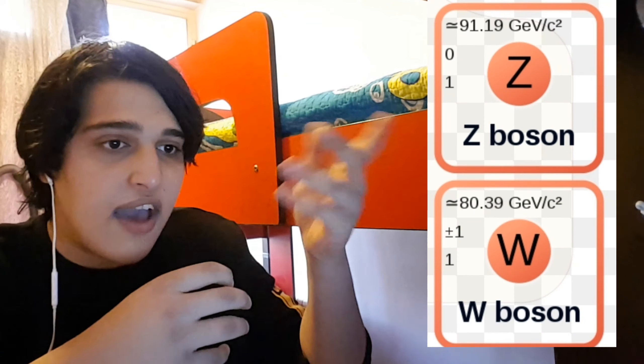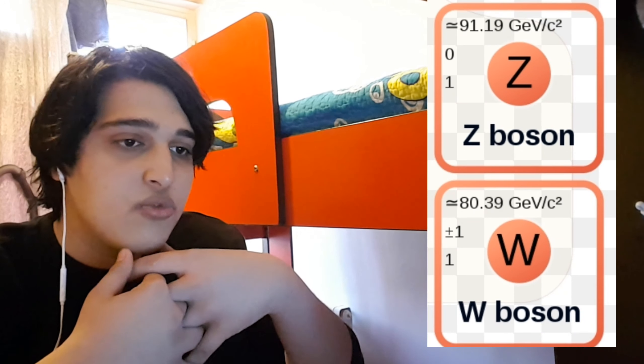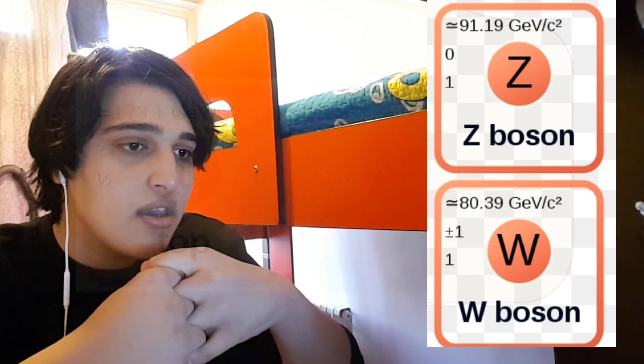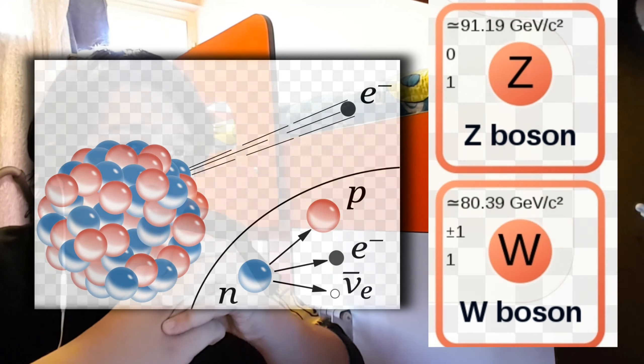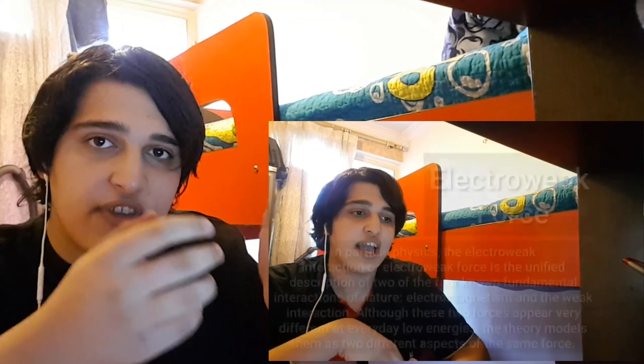However, boson W and boson Z have the largest mass after the muon and top particles. These two particles have the greatest responsibility in the process of proton and neutron decay. And this process represents for us the weak nuclear forces.